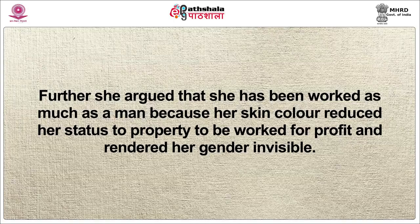Truth highlighted the specific experience of black women in America. She claimed she bore children but that they were sold into slavery by the slave owner. She compared the treatment given to white women — where they were carried over ditches and helped into carriages — and noted that she received none of this attention because of her race. Further, she argued that she has been worked as much as a man because of her skin colour, and her reduced status to property to be worked for profit rendered her gender invisible.